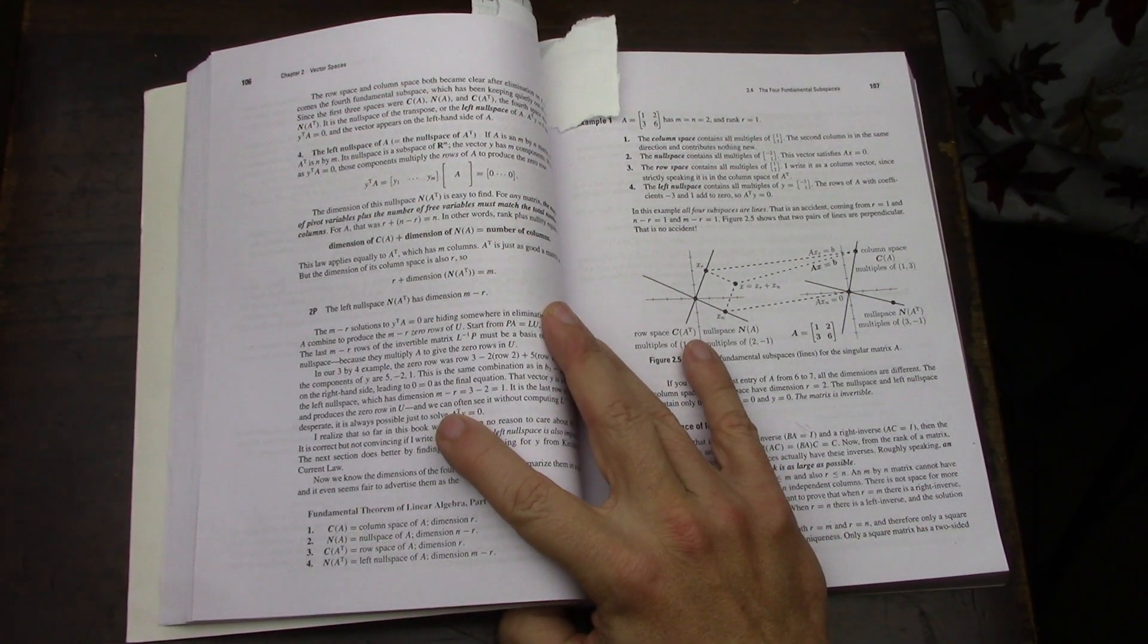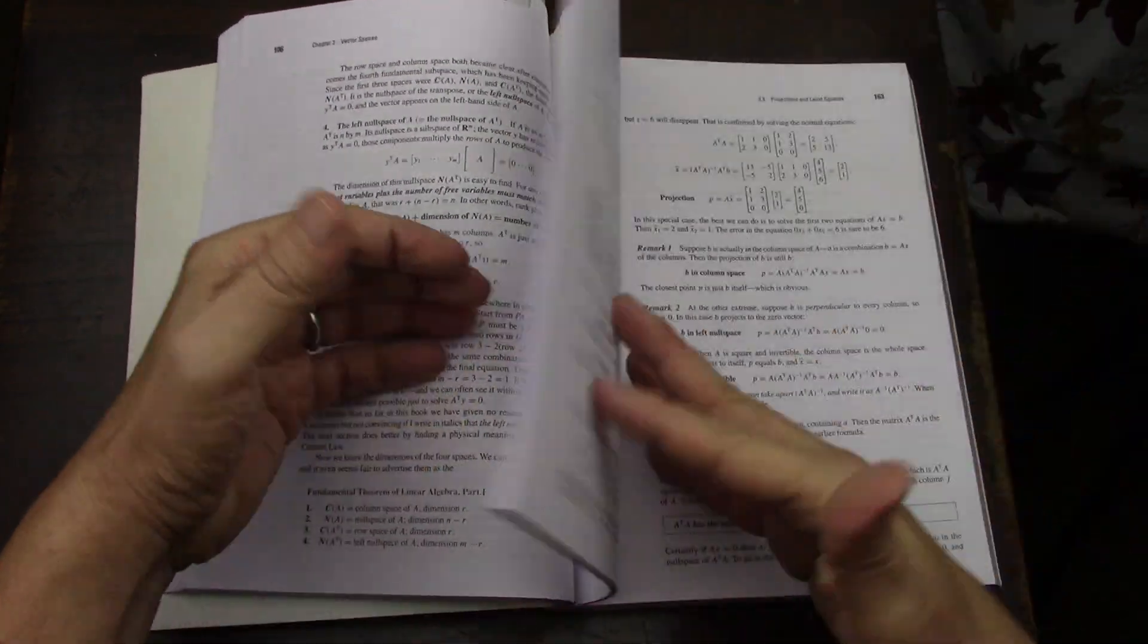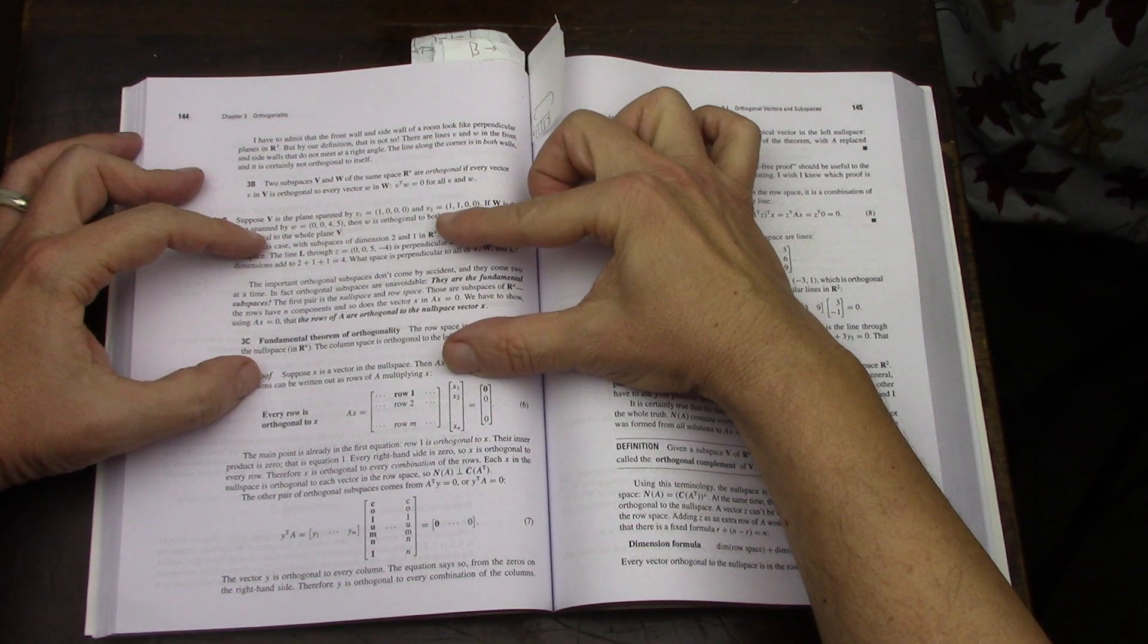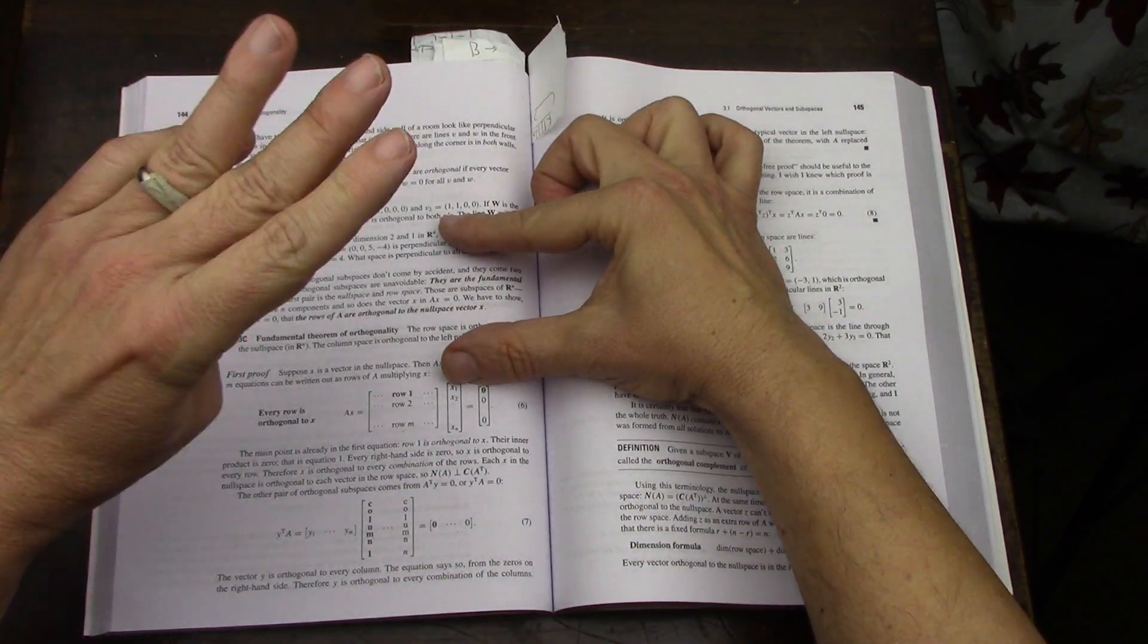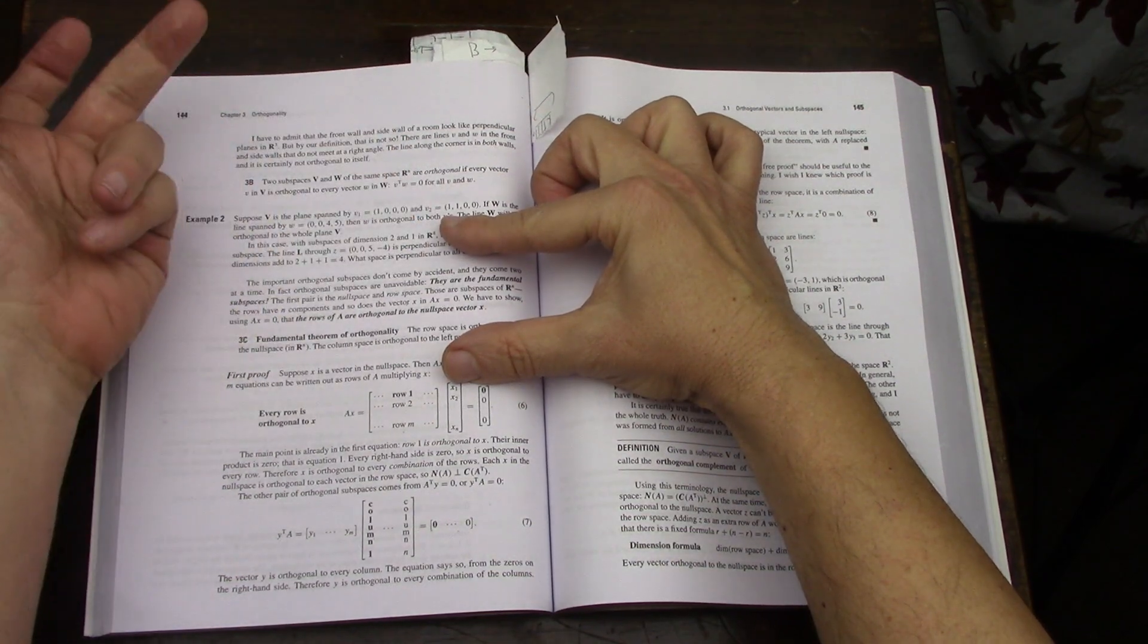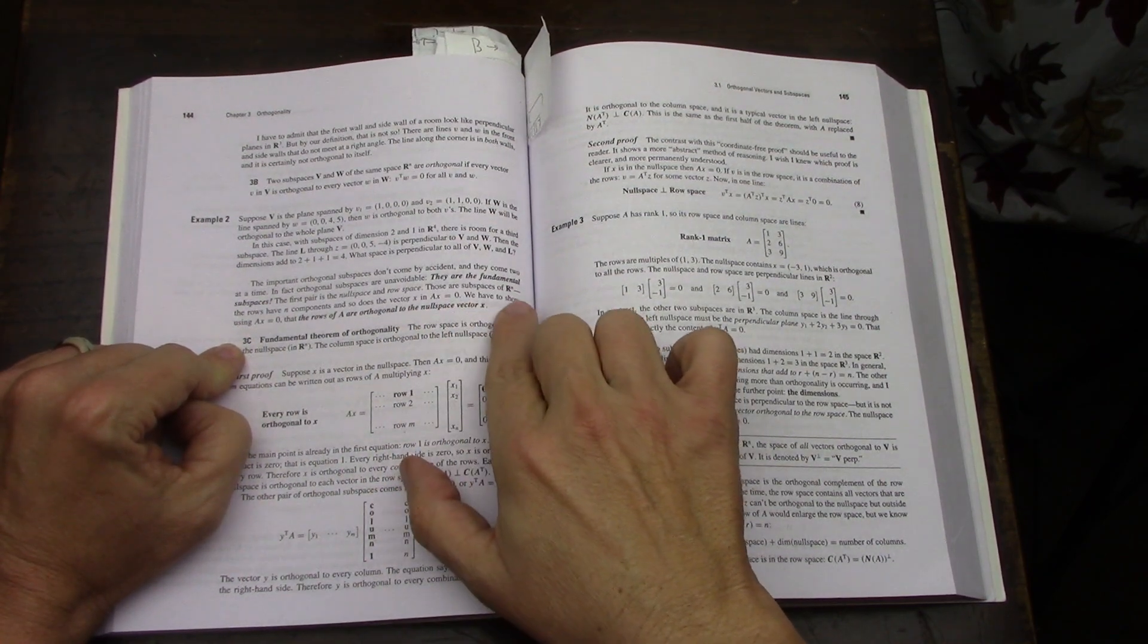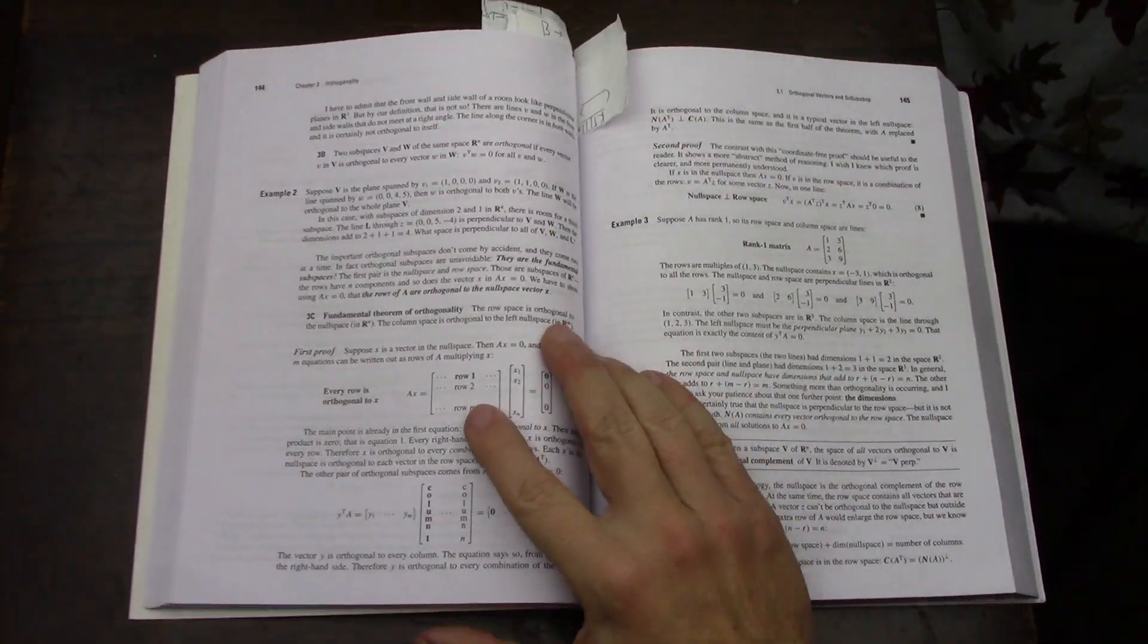Let's head out to page 107. He's got some good examples here. And he also has, on page 144, some additional examples, and says something that I like. The important orthogonal subspaces don't come by accident, and they come two at a time. In fact, orthogonal subspaces are unavoidable. They're the fundamental subspaces, those four that he mentioned before. The first pair is the null space and row space. I got that right when I was looking in that figure for the fourth one. Those are subspaces of R to the N, the domain. The rows have n components, and so does the vector X in AX equals zero. We have to show, using AX equals zero, that the rows of A are orthogonal to the null space vector X. Strang is really great.